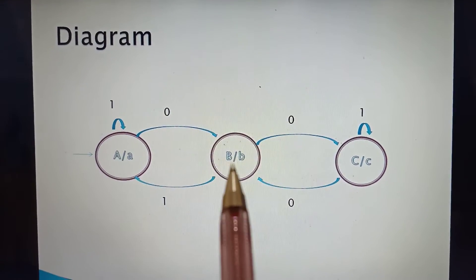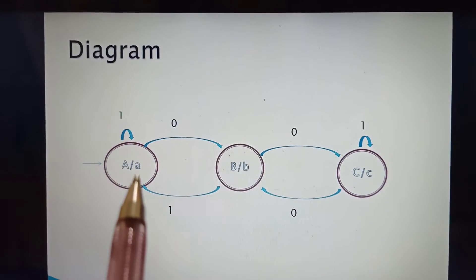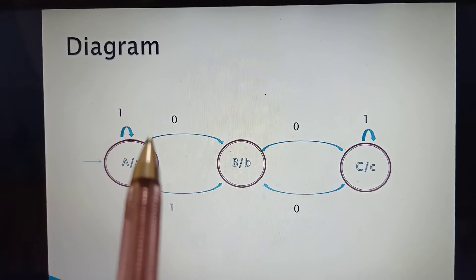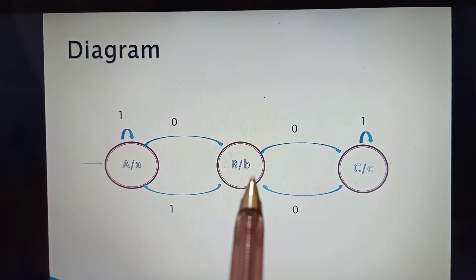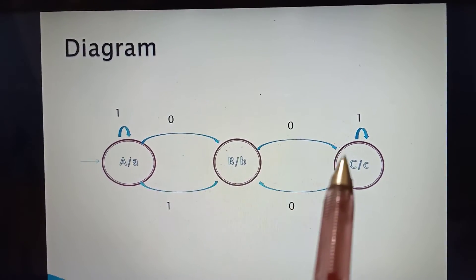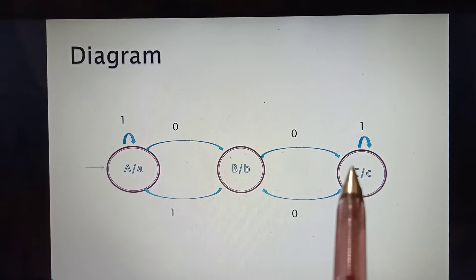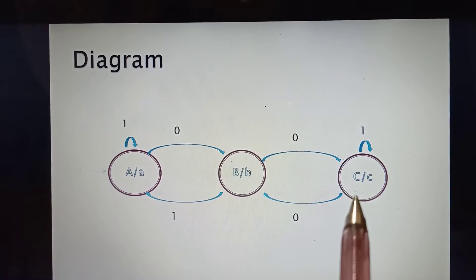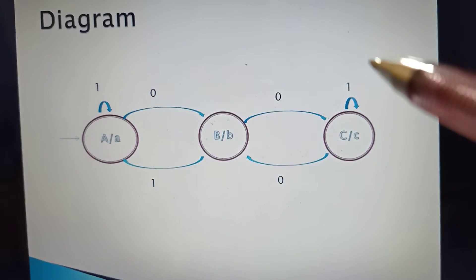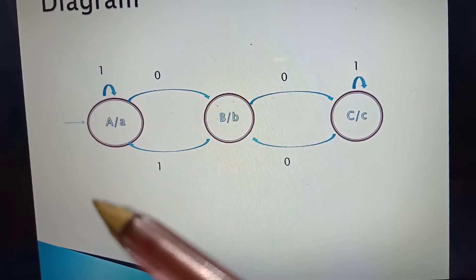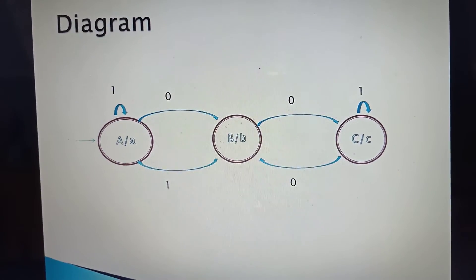In the Moore machine diagram, we have three states: A, B, and C. If state A has input 1, it goes to itself and produces output a. If state A has input 0, it goes to state B and produces output b. If state B has input 1, it goes to state C and produces output c. If state C has input 1, it goes to itself and produces output c. If state C has input 0, it goes to state B and produces output b. If state B has input 1, it goes to state A and produces output a.